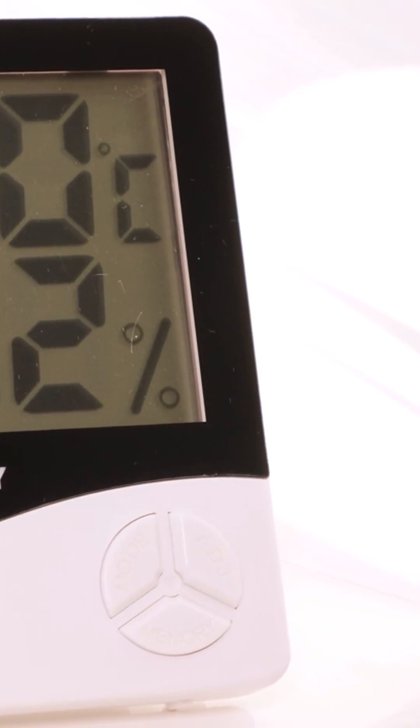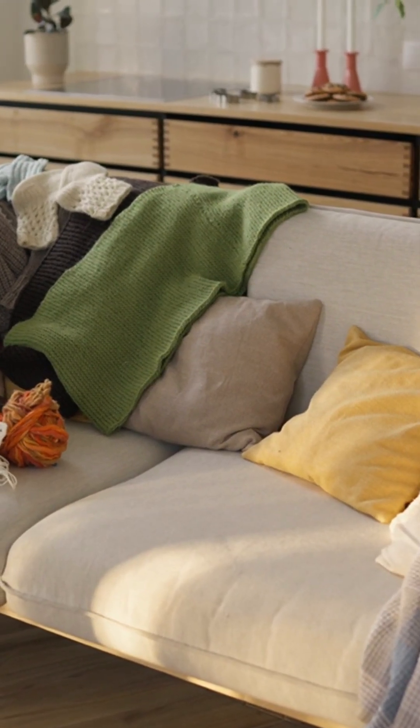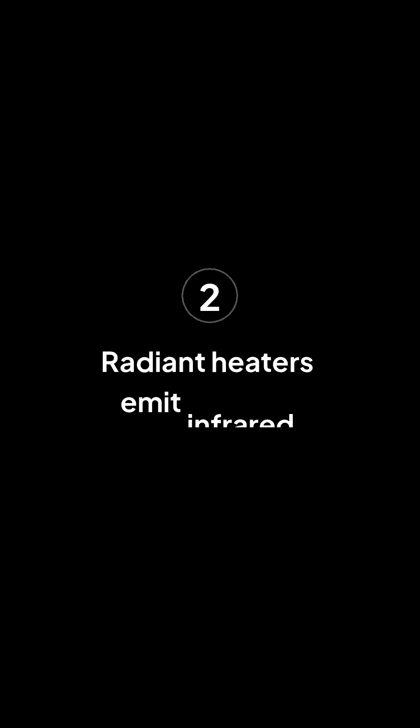Convection heaters warm air. They pull in cool air, heat it, and release warm air back into the room. This creates a comfortable, cozy atmosphere. Radiant heaters work differently.